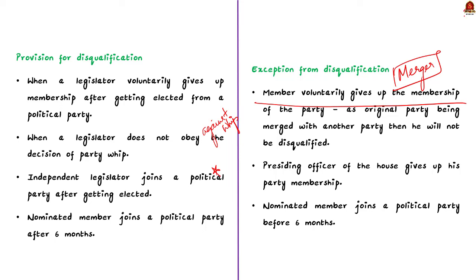Another exception is that if a member, after being elected as the presiding officer of the house — that is Speaker of Lok Sabha or Speaker of a state legislative assembly — voluntarily gives up membership of their party and rejoins the party after ceasing to hold that office, they cannot be disqualified. This exception is provided in view of the dignity and impartiality of the office of presiding officer. Lastly, if a nominated member joins a political party before the expiry of six months, he need not be disqualified.